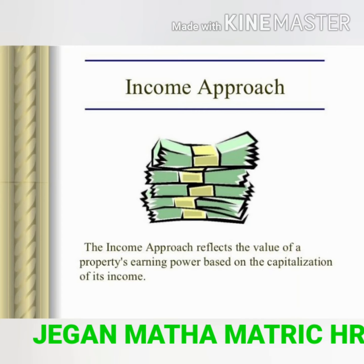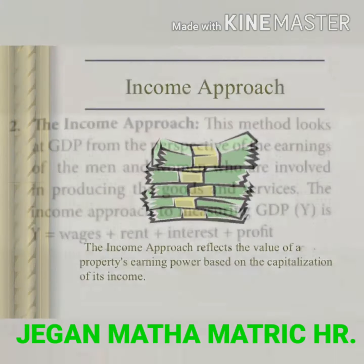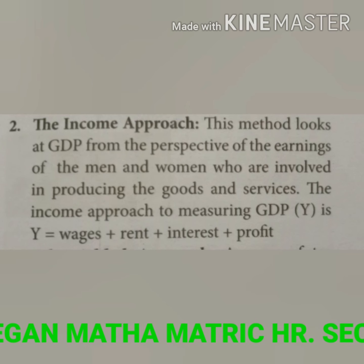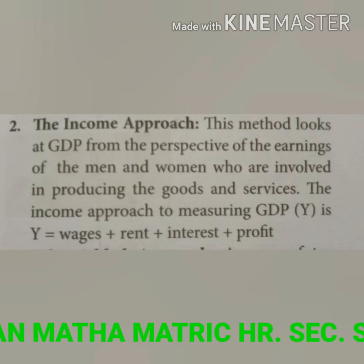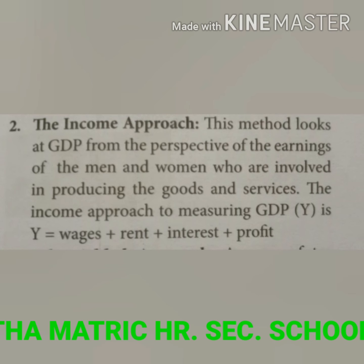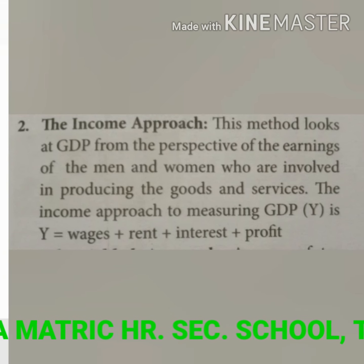The second method is the income approach. This method looks at GDP from the perspective of the earnings of men and women involved in producing goods and services. The income approach to measuring GDP is: Y equals wages plus rent plus interest plus profit.